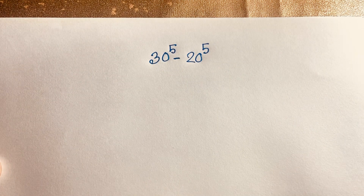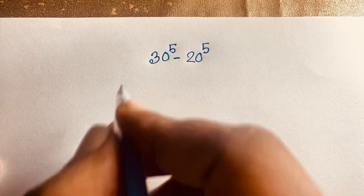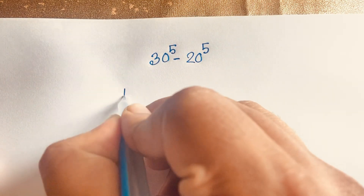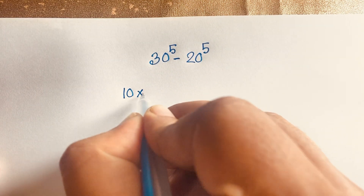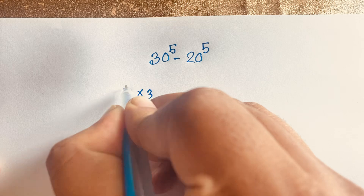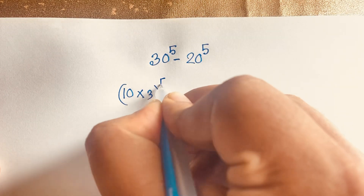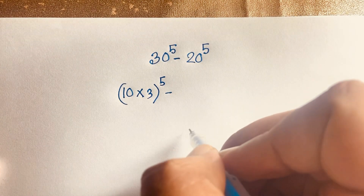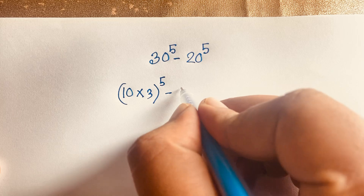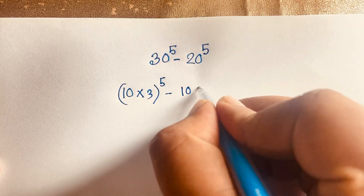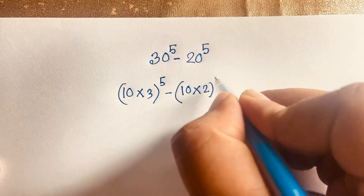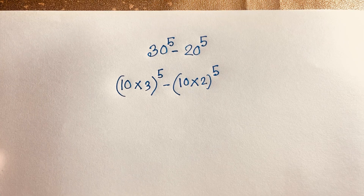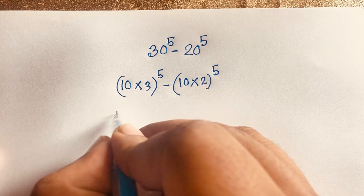First of all, here is 30 — you can see this 30, it will be 10 times 3. So 10 times 3 to the power 5, minus 20 — you can see this 20, it will be 10 times 2 — and whole to the power 5.